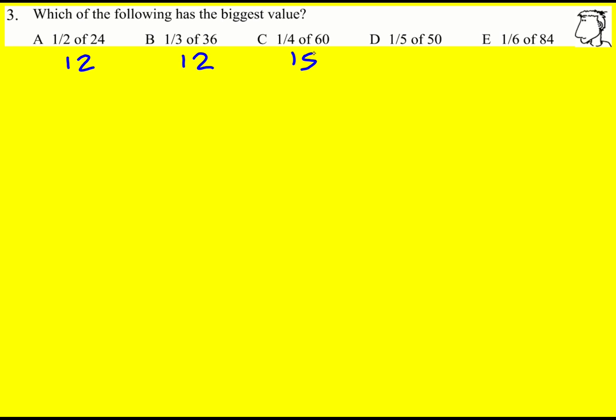Here we get 15, so that one's winning so far. 50 divided by 5 is 10, and then 84 divided by 6.